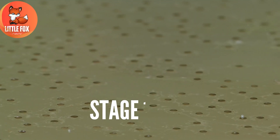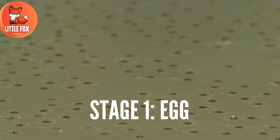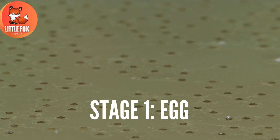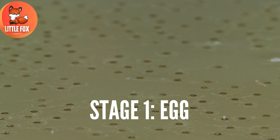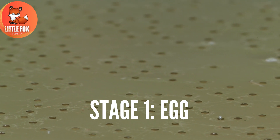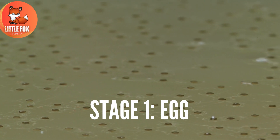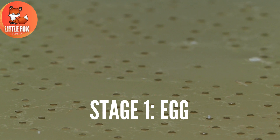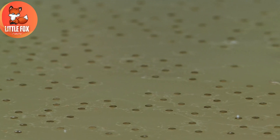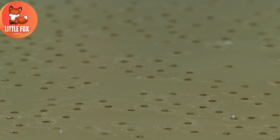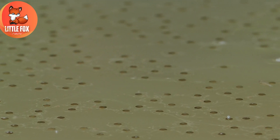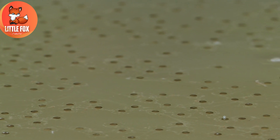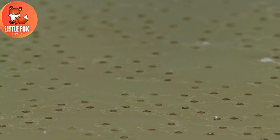Stage 1: Egg. Female frogs lay clusters of gelatinous eggs, often referred to as spawn or egg mass. These eggs are typically attached to aquatic vegetation or float freely on the water's surface.